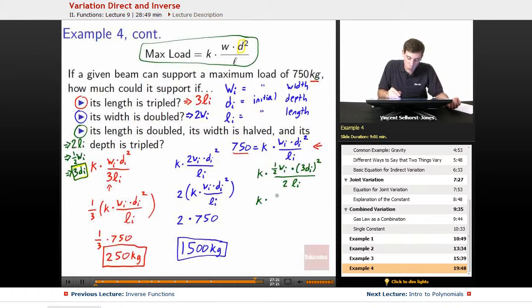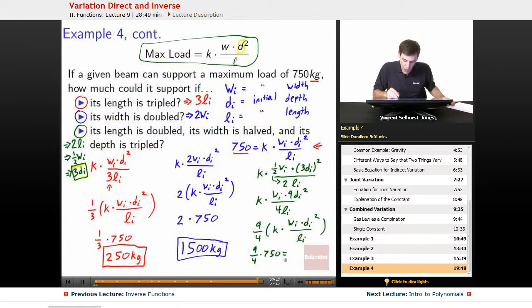So K times 1 half. Let's pull the 1 half down. So we'll get WI up here, but it'll be divided by 4 LI times 9 DI squared. So we can pull out the coefficients, and we'll get 9 fourths K times WI times DI squared over LI. We know what that guy is. That guy's 750, so 9 fourths times 750. Plug that into a calculator, and we get 1,687.5 kilograms.